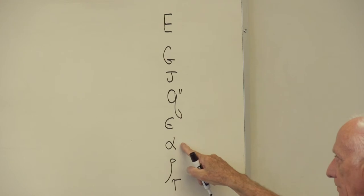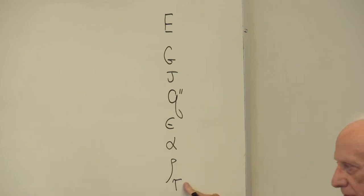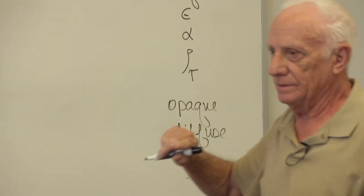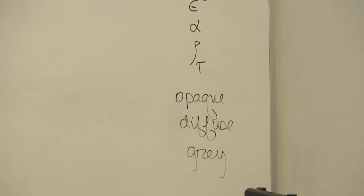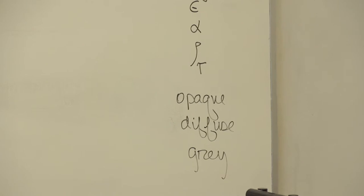Epsilon, alpha, rho, tau. Opaque surface, tau equals zero. Black surface, epsilon equal one. You have to understand the language of radiation.